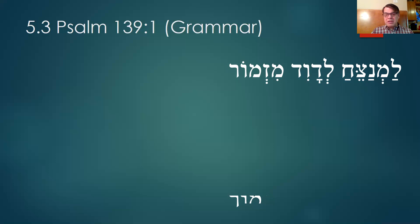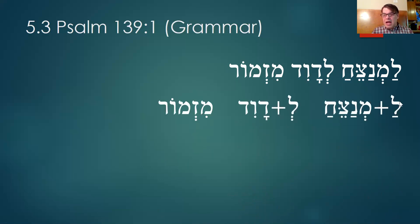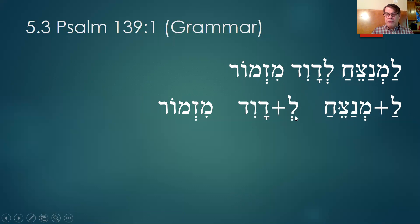Generally we don't consider these headings to be part of the inspired text. That doesn't mean they're wrong — it just means there has generally been a freedom among evangelical scholars to question the headings a little more than the rest of the text. So if we break it apart: there's a lamed at the front that means 'to' or 'for,' and then menadzeach is the musician of some sort — I'm not sure we know exactly what kind of instrumentalist this is — but 'for the instrumentalist,' and then la David, for David. Usually translated 'by David,' but that's not actually the normal meaning of la. Maybe it means 'attributed to David,' something like that.